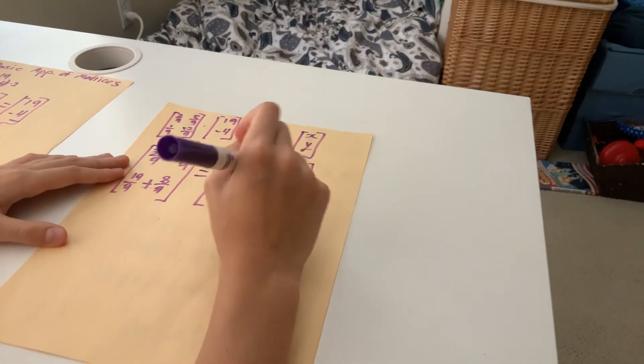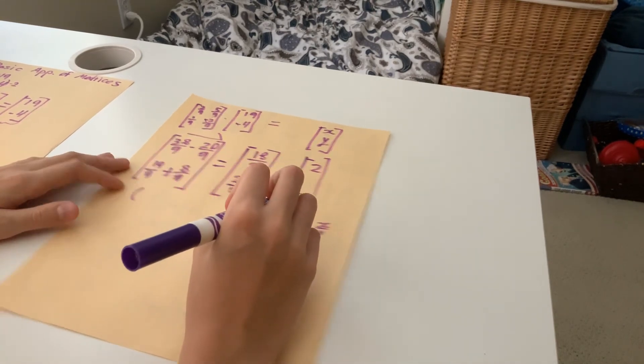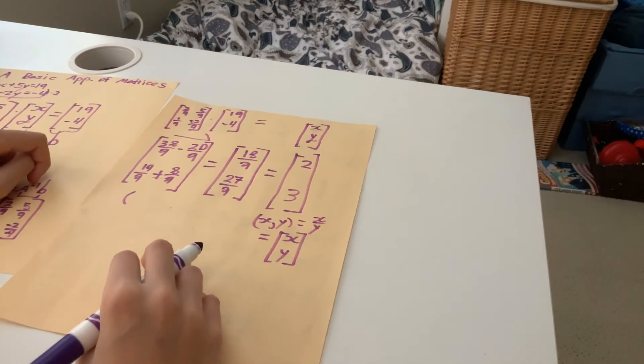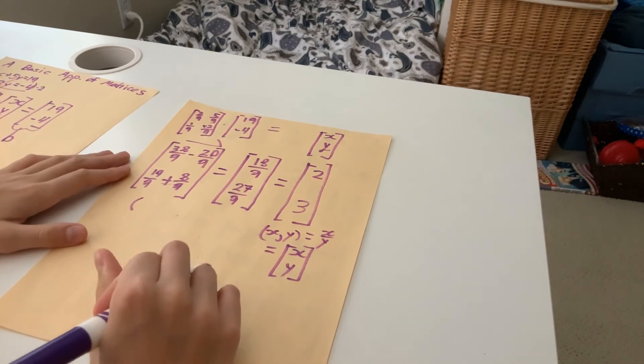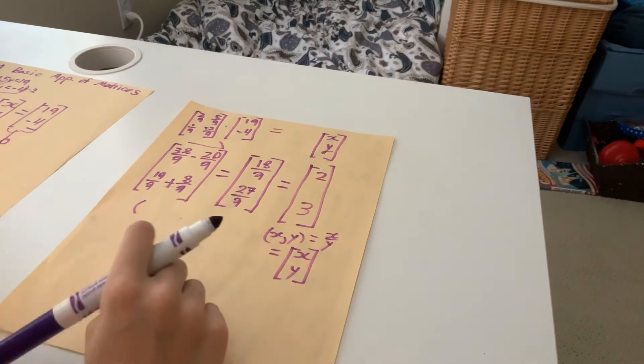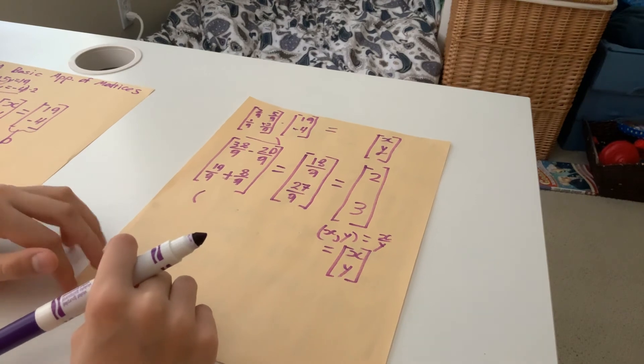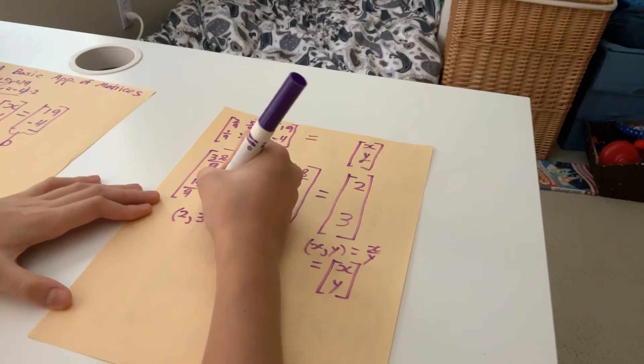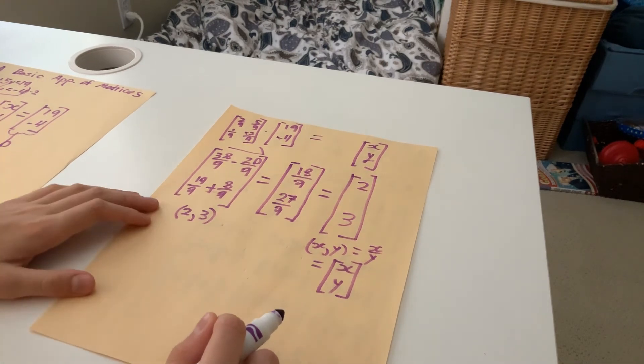So now theoretically, if we were to graph the lines, which we might soon enough, but you should already be familiar with how to graph it, just put it into y equals mx plus b form. And if you put it into y equals mx plus b form you can graph it, and you should be familiar with that. So theoretically the point 3, 2, or this is equal to x and this is equal to y, that should be the solution for these two graphed lines. If we were to graph them, that's where they intersect. Perfect.